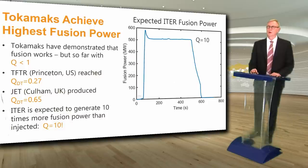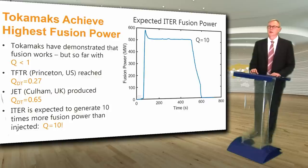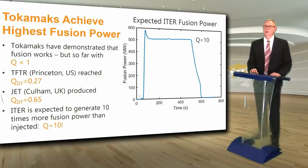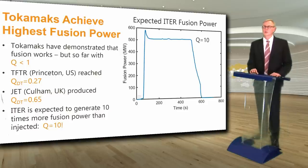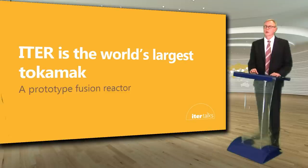ITER will generate 10 times more fusion power than the power injected to heat the plasma — Q equals 10. But ITER is an experiment and it's not designed to generate electricity, which will require a somewhat higher Q value to account for all the power used in all the ITER plant systems. I'll discuss that more later.